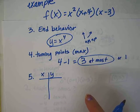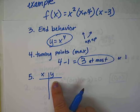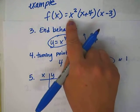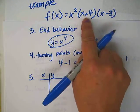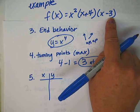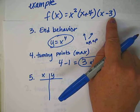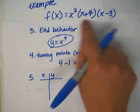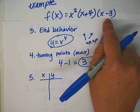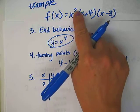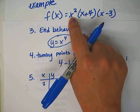The next step is to make a table of other points. We can plug in some x values into our function and find the y values. We don't need to use the x-intercepts since we know y equals 0 there, so pick other numbers besides 0, negative 4, and positive 3.